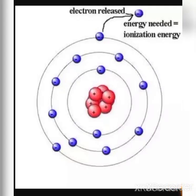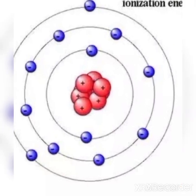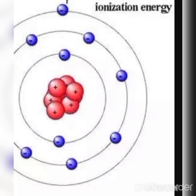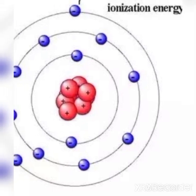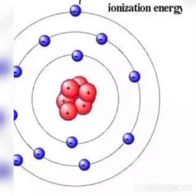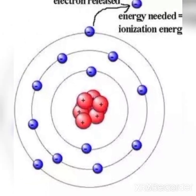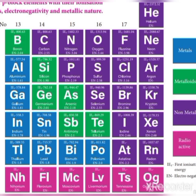Metallic nature depends on ionization energy. The energy required to remove an electron from the outermost orbital is called ionization energy. In a group, ionization energy decreases. Hence, the metallic character increases going down the group.